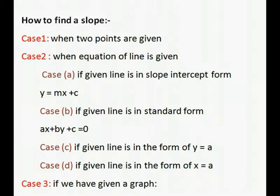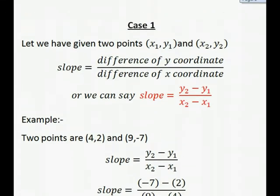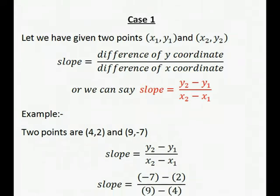Now case 1. Suppose we have two points (x1, y1) and (x2, y2). So slope is equal to the difference of y coordinates divided by the difference of x coordinates. In other words, slope equals (y2 minus y1) divided by (x2 minus x1).